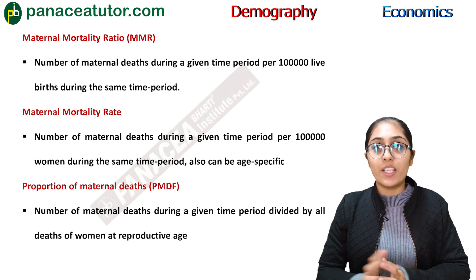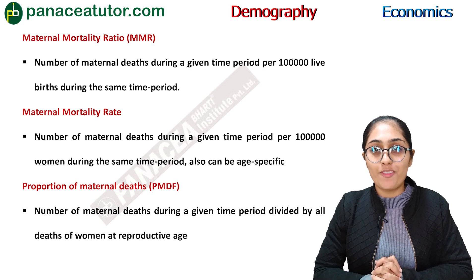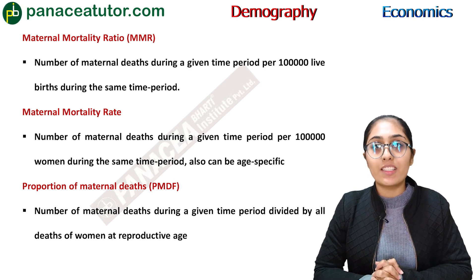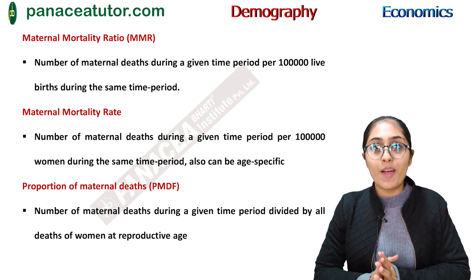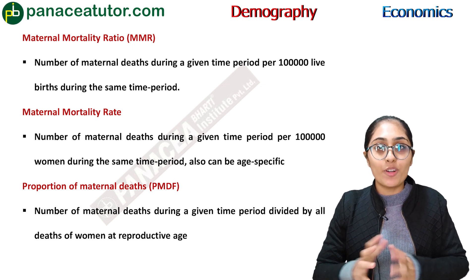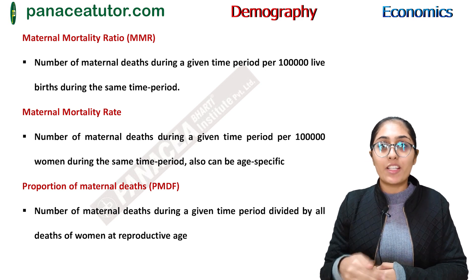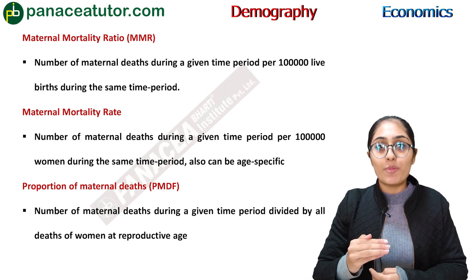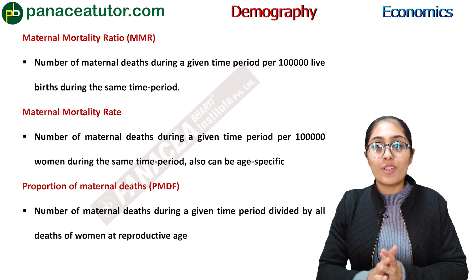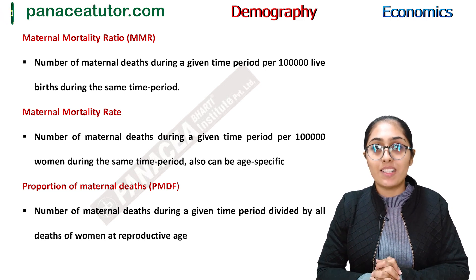Proportion of maternal deaths means the number of maternal deaths during a given time period divided by the number of women at a reproductive age. When we divide maternal deaths by the number of women of reproductive age, it becomes the proportion of maternal deaths.